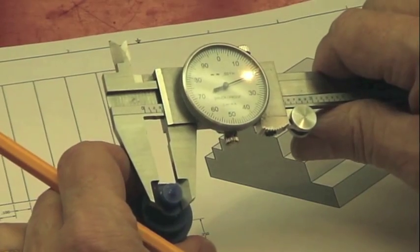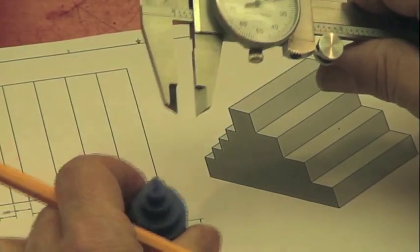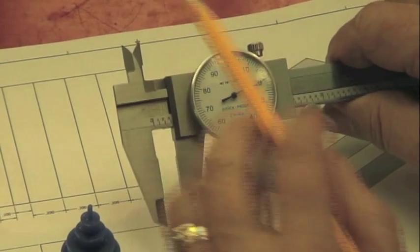When the jaws are locked in place, you want slight resistance when the part is pulled out. The measurement in this case is 0.321.